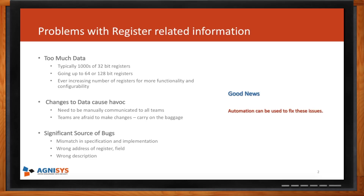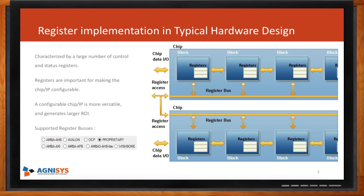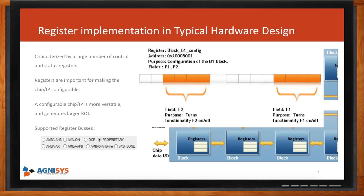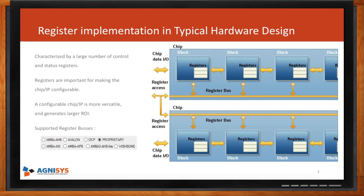This can be a significant source of bugs because there are so many registers and so many fields — things like mismatches between specification and implementation, registers at the wrong address, or even wrong descriptions. These registers are responsible for configuring the system and also communicating status information back to the host, so they're all over the place in each IP. They're typically accessed by a register bus — could be AMBA, OCP, Wishbone, or even a proprietary bus. Many customers use AXI, APB, or AHB buses.